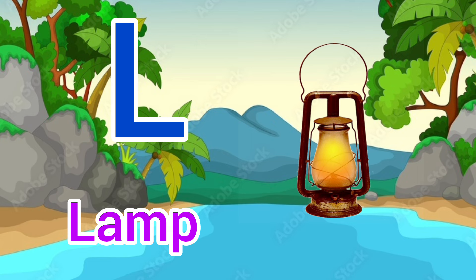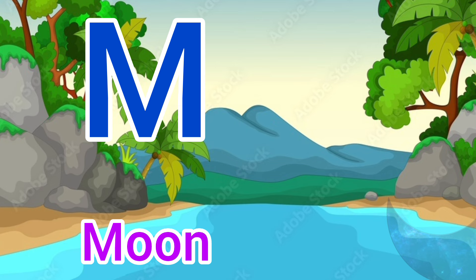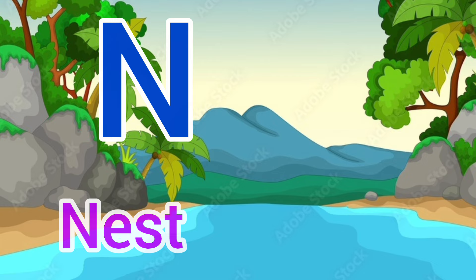M for moon, moon means chad. N for nest, nest means ghosla.